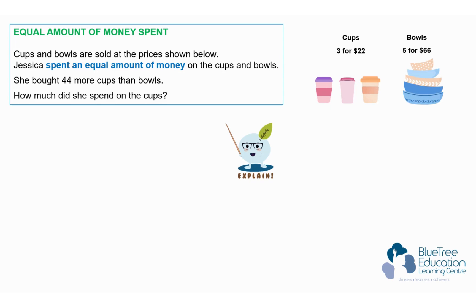This will prompt us to look for the LCM of 22 and 66, which will make 66. This topic on lowest common multiple was first taught to the primary fours and this is how it is applied to upper primary questions.